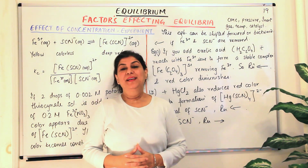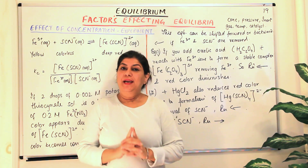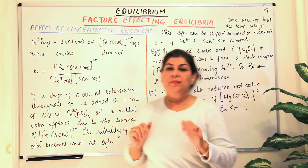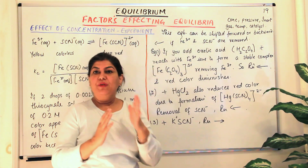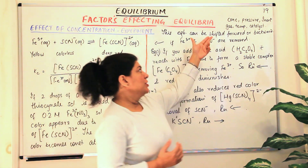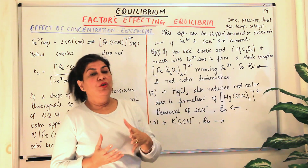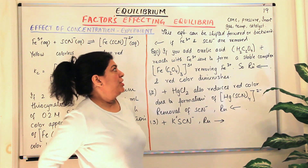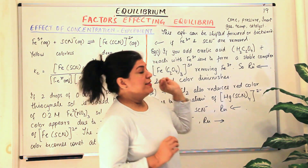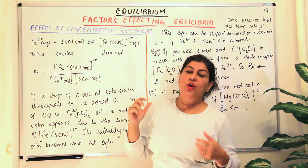Hello, I'm Seema and welcome to part 19 of the chapter equilibrium. In part 17 we started discussing the factors affecting equilibrium. The five factors were the change in concentration of the reactant or product, the change in pressure, the addition of an inert gas, a change in temperature, and the addition of a catalyst. In part 18 we were discussing the effect of concentration on equilibrium.